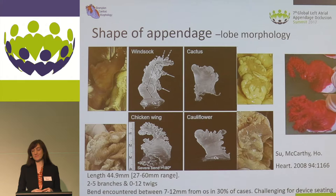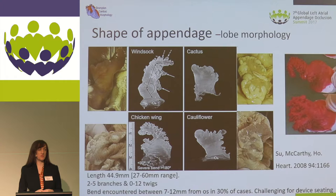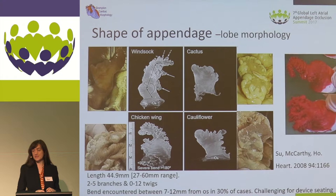We looked at some of our specimen cases a few years ago to identify the common morphology. And these are the four types which have been replicated in very many clinical papers: the windsock, cactus, chicken wing, and cauliflower morphologies. There are other descriptions — spiral, for example — but these are the four that have been replicated in very many papers.